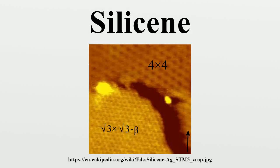Silicene is a two-dimensional allotrope of silicon, with a hexagonal honeycomb structure similar to that of graphene.